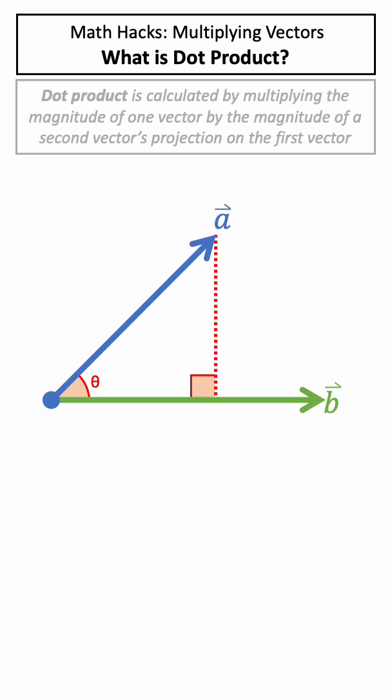The first thing we need to do is draw a line perpendicular from vector B to the head of vector A. Now using this right angle, we can break our vector A into two components, one parallel to vector B and one perpendicular to vector B. We can ignore the perpendicular component for now, as the projection of vector A on B is just the parallel component here.